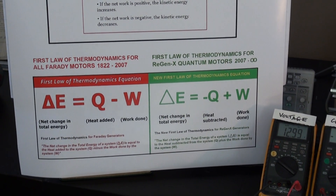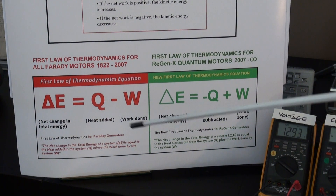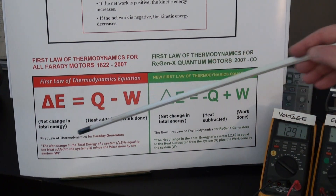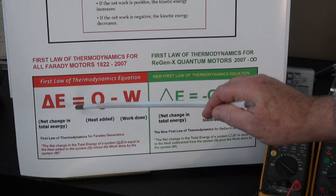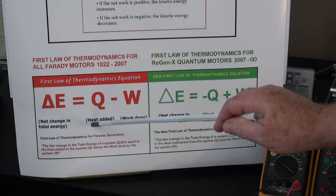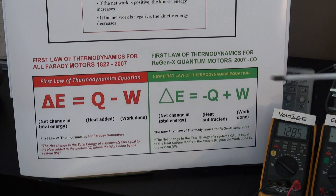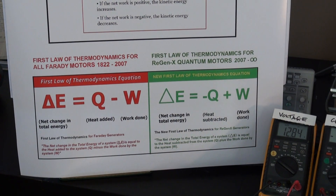This is the equation for the first law of thermodynamics, which says that the net change in total energy in the Tesla induction motor is equal to the heat added to the system — meaning the input energy that's being converted to heat in the motor — minus the work that's being performed.